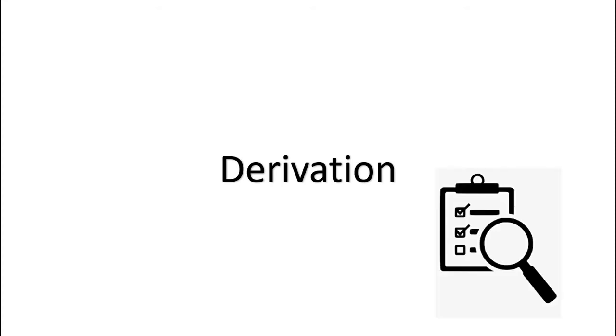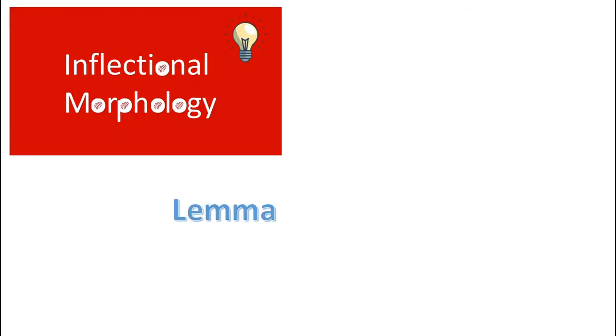In this video, we're talking about derivation — the aspect of morphology that made 'un-break my heart' possible. First, a quick review. In inflectional morphology, we talked about how a lemma undergoes inflection to create forms in a lexeme, and each inflected form in the lexeme carries unique grammatical information.